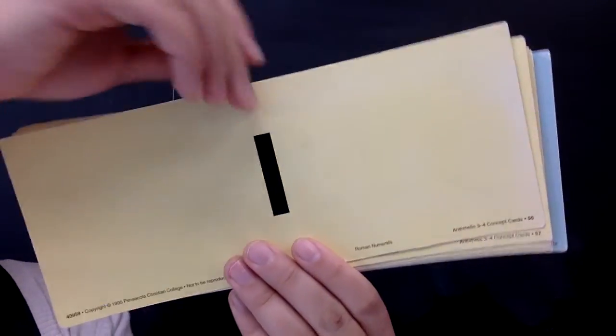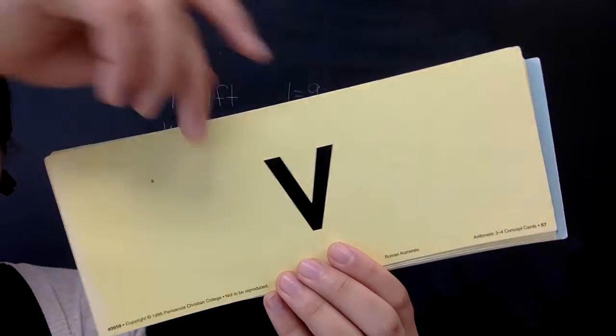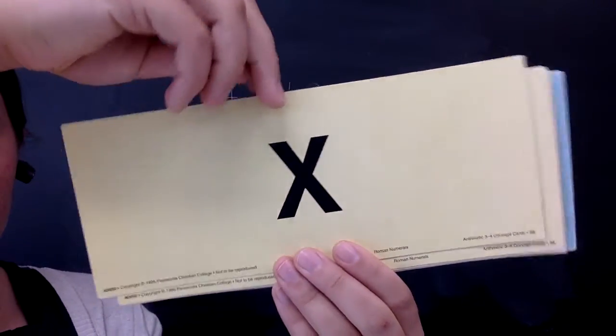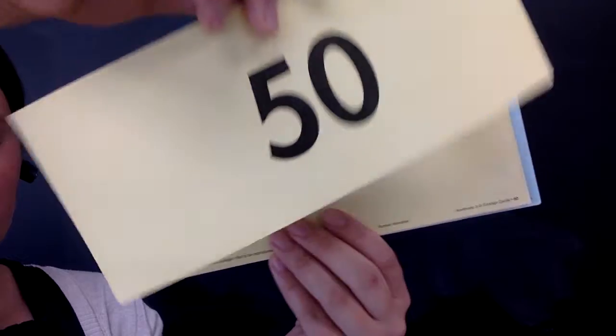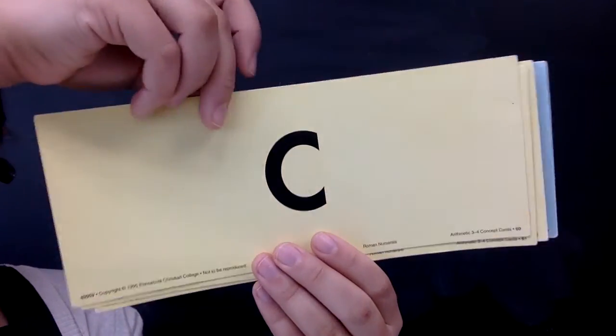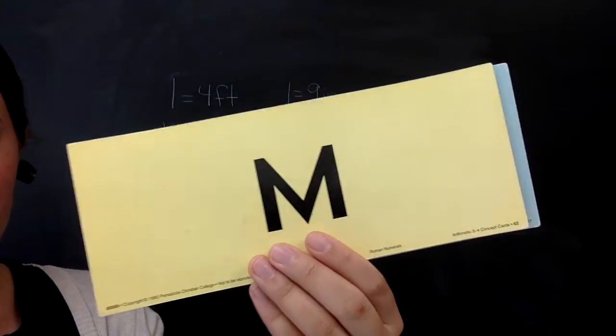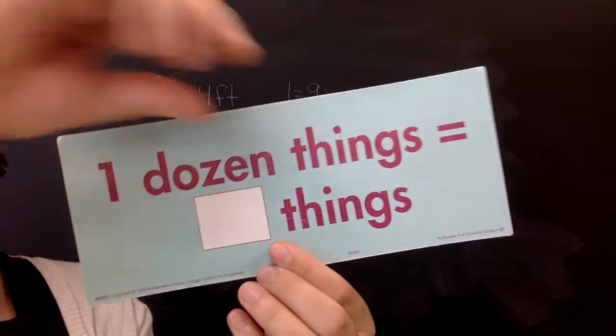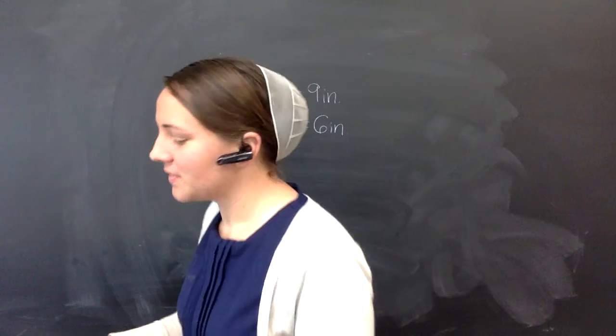And Roman numerals, we haven't had these for a while. Roman numerals for 1, 5, 10, 50, 100, 500, 1,000, and one dozen things equals how many things? 12 things.